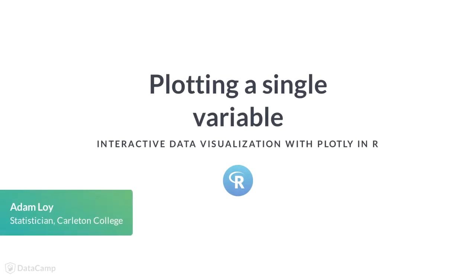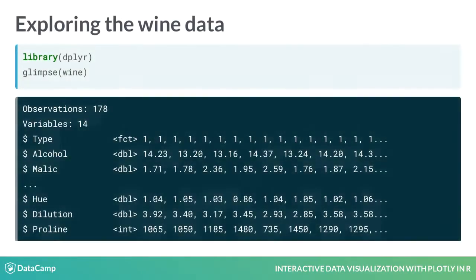In the previous lesson, you learned how to convert your static ggplot2 plots into interactive Plotly charts. Not all ggplot objects can be converted to Plotly objects, and sometimes you want more control over how your graphics are rendered. In this lesson, we'll explore how to create histograms and bar charts using Plotly, as first examples of univariate graphics, exploring the distribution of wine types and phenols using the wine dataset.